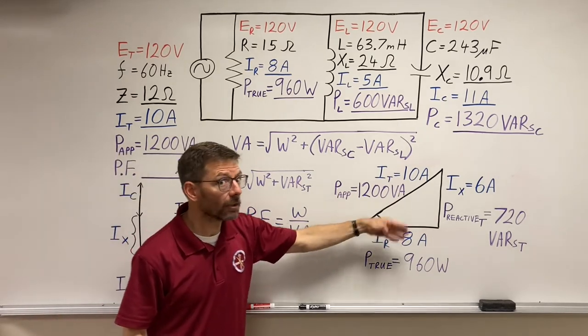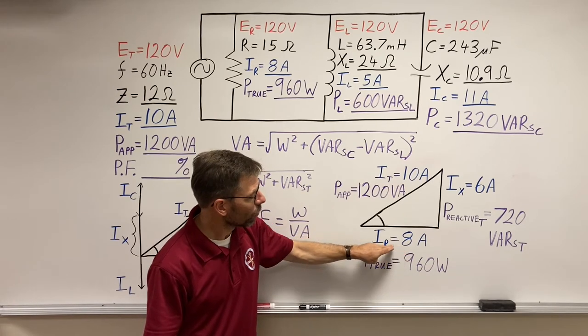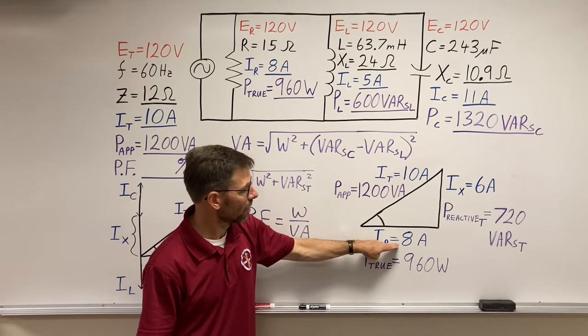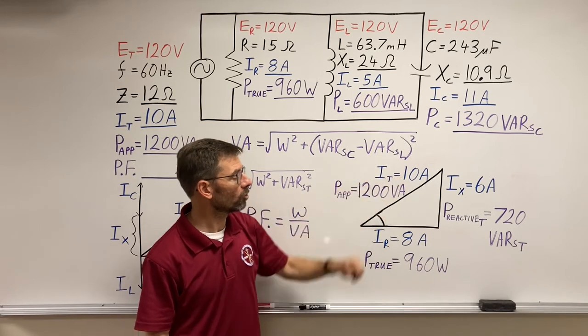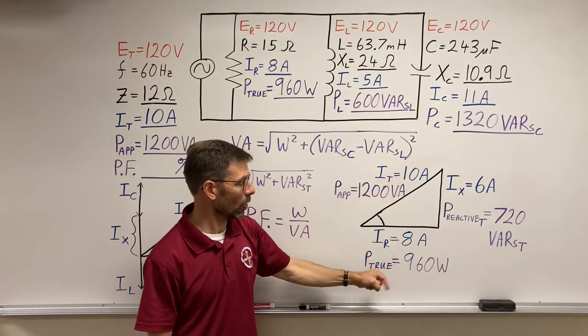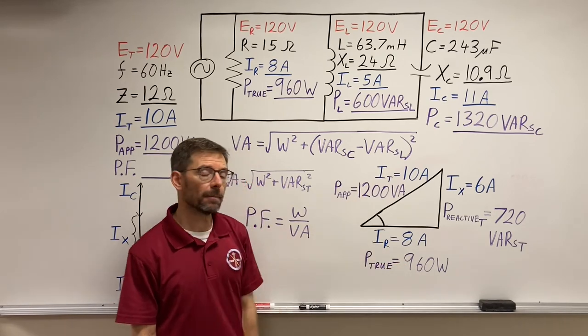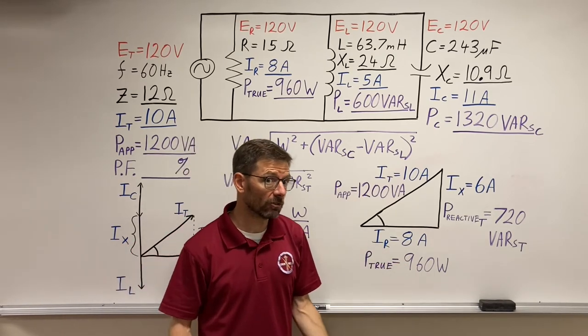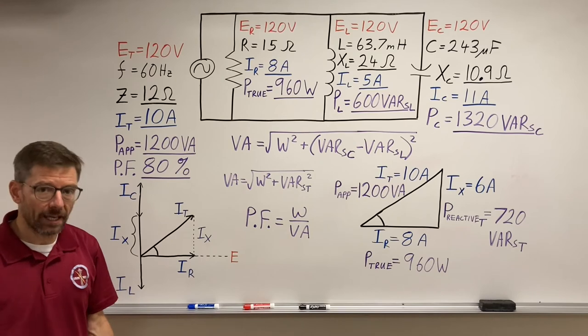We could also, because the triangles are proportional, use my resistive amps over my total amps. And you do either one - 8 divided by 10 or 960 divided by 1200 - and you're going to get 80%.